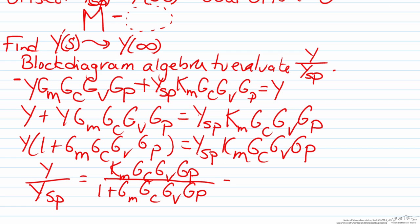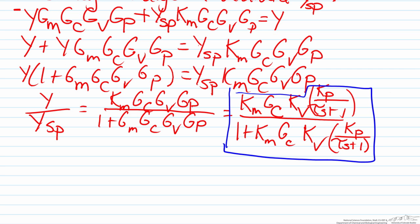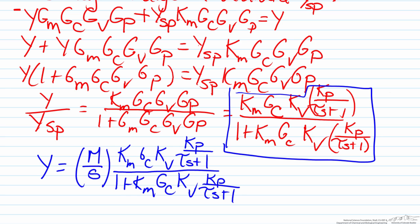So what we will now do is we will substitute in the values which we know. So we will substitute in Km, the controller we will leave for now, Gv will be Kv, Gp will be Kp over tau s plus one, and we will have something similar in the denominator. We can further isolate Y by moving Ysp over, and remembering that Ysp is just the step change M over s. Now that we have our value of the transfer function for the output variable, what we can now do is begin to analyze for the different control schemes.